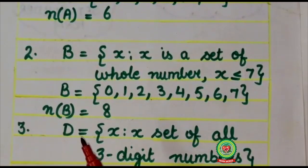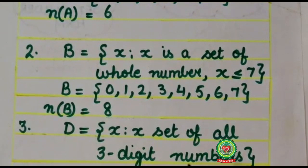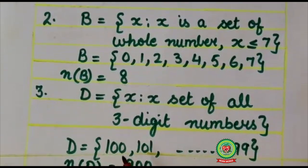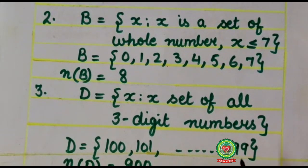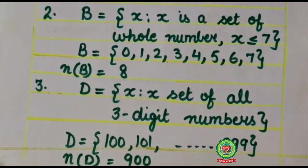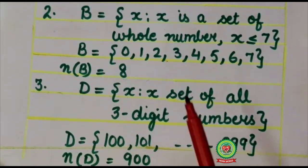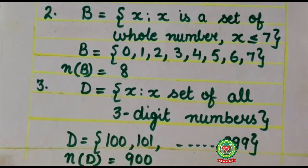Let's have one more example. D: {x: x set of all three digit numbers}. Three digit numbers starts from 100 and ends in 999. Now as you can see there are 900 elements. Therefore, it is also a finite set because it is having countable elements.